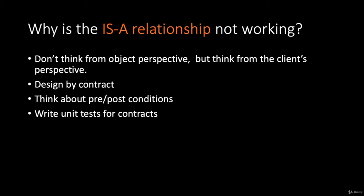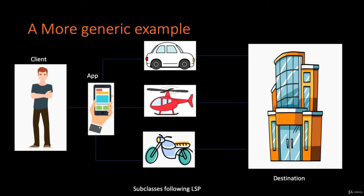Let's look at a more generic example. If you are a client whose job is to reach a destination, you use an app to book a vehicle. It doesn't matter whether you are taken by a car, motorbike, or helicopter — as long as you reach safely. This is LSP in action: all subclasses of the base class Vehicle are capable of taking you to the destination. In programming, the client class only cares about getting its job done through the dependency, no matter which internal subclass implementation is doing the task.